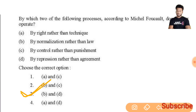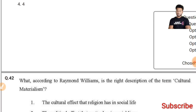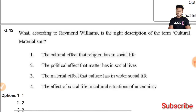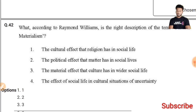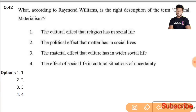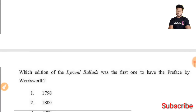Question 42: What according to Raymond Williams is the right description of the term 'cultural materialism'? The right description of cultural materialism is 'the material effect that culture has in wider social life.' The third option is the right answer.